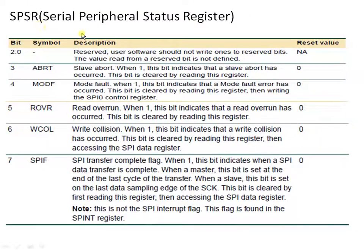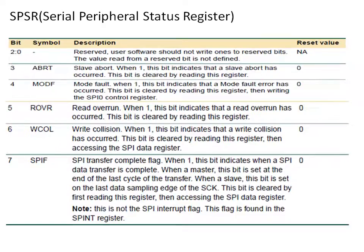Now let us look at SPSR, the serial peripheral status register. Starting from the MSB, we have SPIF — the SPI interrupt flag. This is the flag we need to check while transmitting or receiving data. After placing the data byte into the data register of master or slave, we monitor this bit. It becomes 1 whenever a transmission is completed successfully or receiving has been completed successfully. If it becomes 1 while transmitting, a character has been transmitted; if it becomes 1 while receiving, a character has been received successfully.